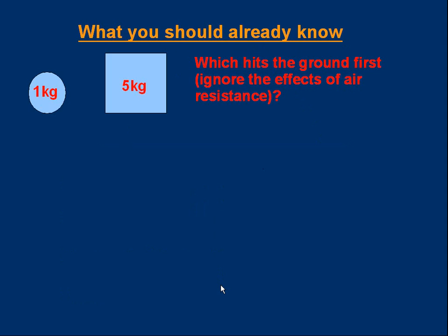Let's start with what you should already know. Here's a question. There's a one kilogram mass and a five kilogram mass. The bottoms are at the same level, and we're going to drop them at the same time. The question is, which hits the ground first? You ignore the effects of air resistance. If you want to think about that, pause the video — I'll tell you the answer in a moment.